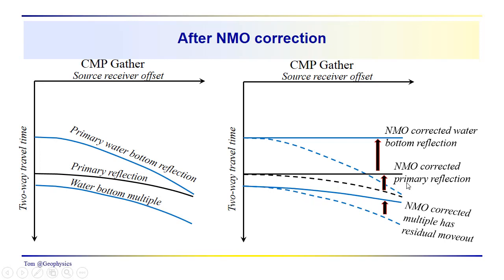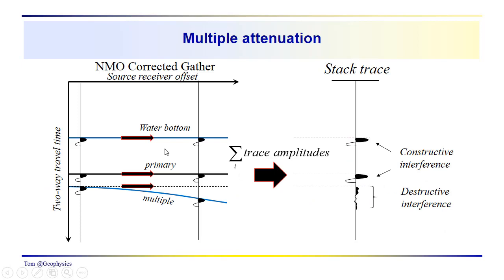So, when we stack, we sum the traces together across the gather. They're going to sum together in phase for the water bottom. They're going to sum together in phase for the primary.